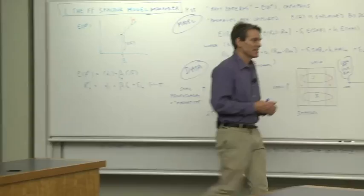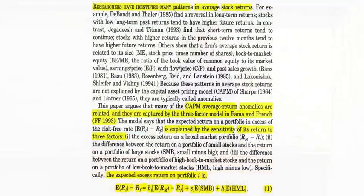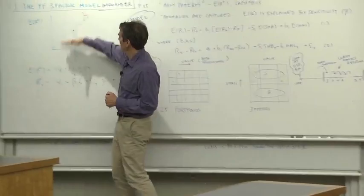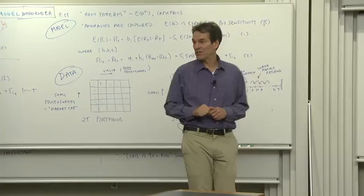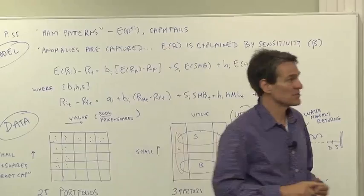Their paper starts right on the first page. Researchers have identified many patterns in average stock returns. So that's the playground. We need to find a set of returns where there is some variation in average stock returns. And they start by listing the many patterns in average stock returns that researchers have noticed and that they are going to try to explain because that's what an asset pricing model is about.